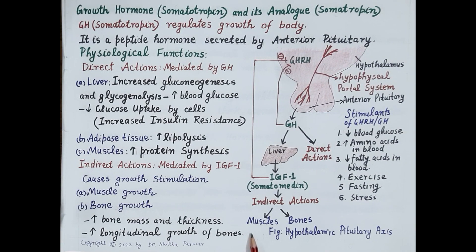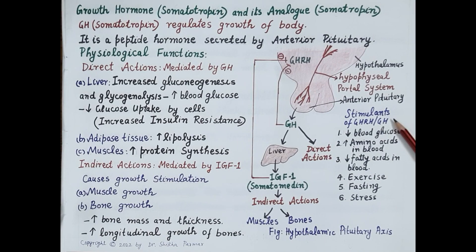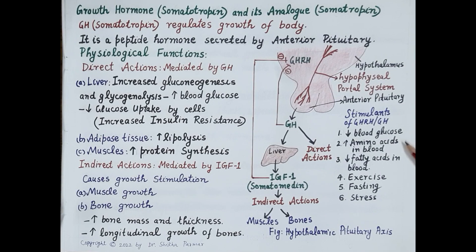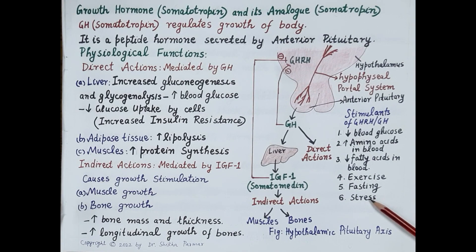Growth hormone is responsible for the growth of the entire body, but it plays a fundamental role in the development of skeletal muscles and bones. The factors that stimulate release of growth hormone include reduced blood glucose, increased amino acids in the blood, and reduced fatty acids in the blood. In addition, exercise, fasting, and stress also stimulate release of growth hormone.